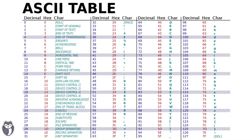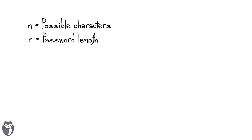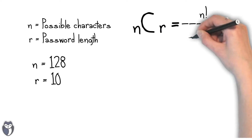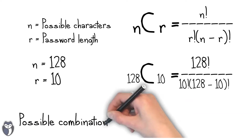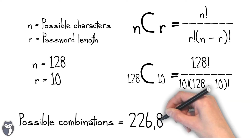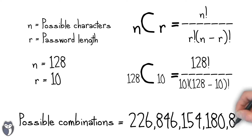This also has a secondary benefit that all high entropy strings have, and that is that you can generate two and the likelihood of them being identical is almost zero. So you don't need to check a database to see if you've issued that key before. For example, if we take the ASCII character set — a 7-bit character set containing a total of 128 characters — and use it in a 10-character API key, the total possible combinations are 226 trillion, 846 billion, 154 million, 180,800 possible different combinations.